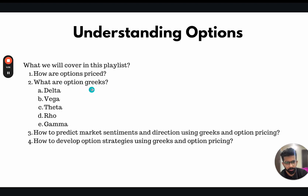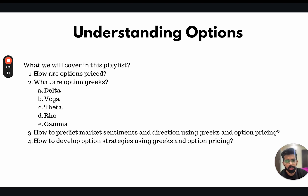We will also cover the option Greeks. I have listed all of the Greeks in the order of their importance: delta, vega, theta, rho, and gamma. We will understand how option Greeks work, how they impact option prices, and how looking at Greeks you can predict market sentiments and directions. By the end of this video series, you will be able to develop option strategies on your own using Greeks and option pricing methodologies, create proper option strategies, define risk-defined trades, and become a better trader overall.